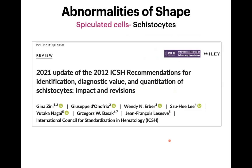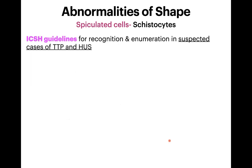There is a 2021 article from the ICSH — the International Council for Standardization in Haematology — providing recommendations for identification, diagnostic value, and quantitation of schistocytes. They gave initial recommendations in 2012 and reviewed their impact in 2021. These guidelines were primarily designed for recognition and enumeration of schistocytes in suspected cases of thrombotic thrombocytopenic purpura (TTP) and HUS, but they are now being applied to any condition associated with schistocytes.